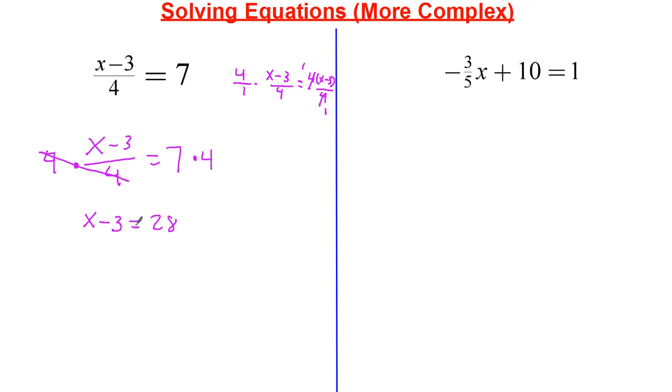So this is just going to be x minus 3 is going to be equal to 28. So we're going to add 3 on this side and then add 3 on this side. So we get x is equal to 31.